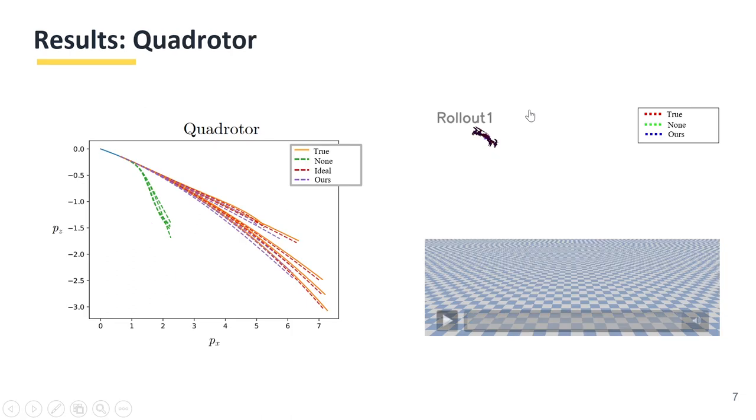We did the same test for the quadrotor system and got similar results. We visualized the results in PyBullet's simulation. The green line is the baseline predicted by Gaussian process, and the blue one is our method, which is much closer to the true dynamics.